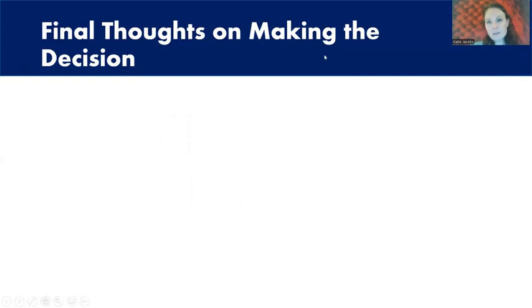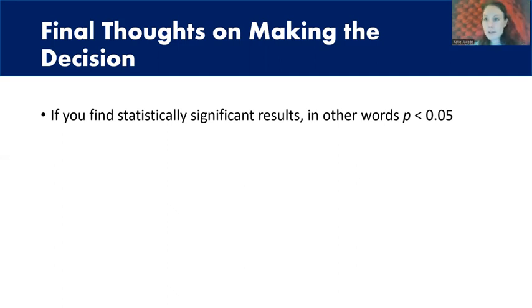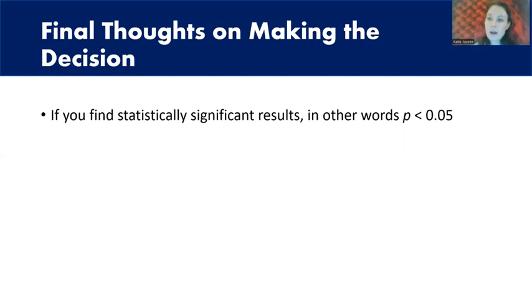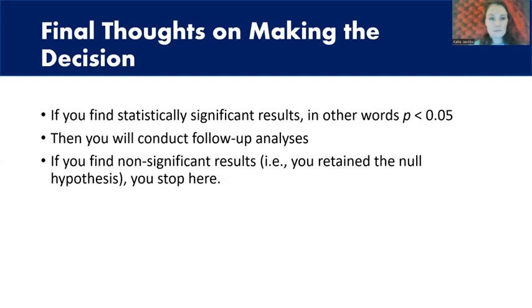Final thoughts on making a decision: if you find statistically significant results — where your p-value is less than 0.05 — we're not actually calculating the p-value directly. The p-value is associated with our test statistic, and our alpha level of 0.05 is associated with our critical value. Instead of comparing p-value to alpha, we compare the test statistic to the critical value. In practice, software will calculate the p-value for you. If it's less than 0.05, you have significant results; if it equals or exceeds 0.05, results are non-significant, and you're done.